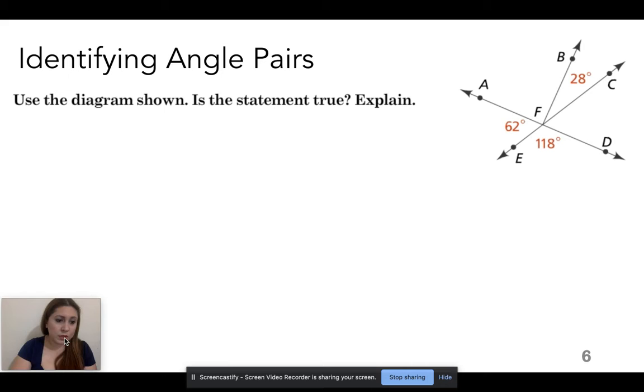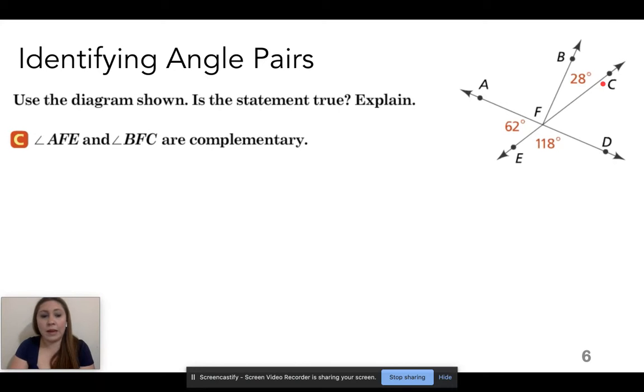Okay, so identifying angle pairs. Use the diagram shown. Is the statement true? Explain. So this should look similar because we've done something just like this. So tell me now which ones are complementary. Yesterday we talked about which ones were vertical and which ones were adjacent. Now we're going to be talking about which ones are complementary and which ones are supplementary.